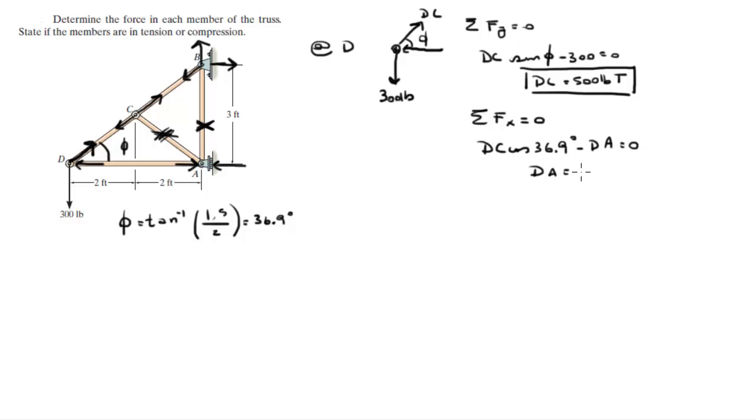So, when you solve for DA, DA is equal to 400 pounds, and as you can see, from the diagram, it's in compression.